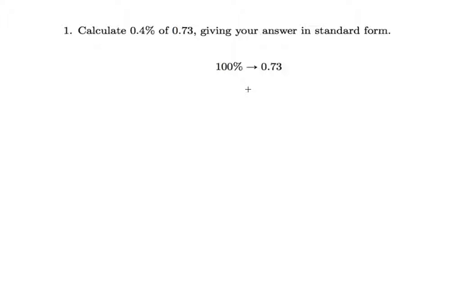So 1% - if we assume a hundred percent is 0.73, then 1% is 0.73 divided by 100. But for 0.4 percent, 0.4 percent is simply just 0.73 over 100 times 0.4.